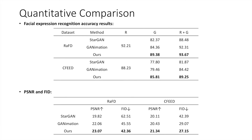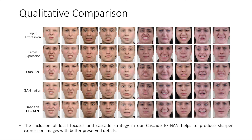Here we show some quantitative comparison results. We evaluate the quality of the images synthesized by our Cascade EFGAN, StarGAN, and GAN-Animation, with facial expression recognition accuracy, PSNR, and FID. As shown in the tables, our proposed Cascade EFGAN outperforms the state-of-the-art methods in all the metrics. Then we show some qualitative comparison results. As can be seen from the figure, with the local focuses and progressive editing strategy, our Cascade EFGAN is capable of generating sharper outputs with better details.